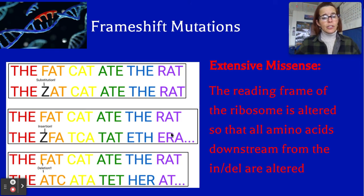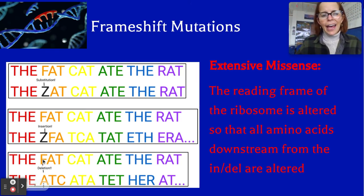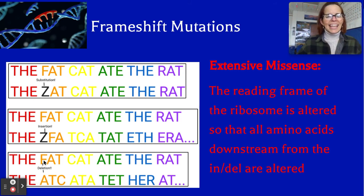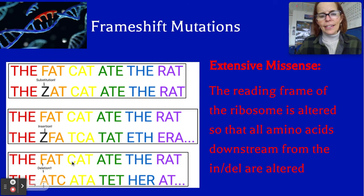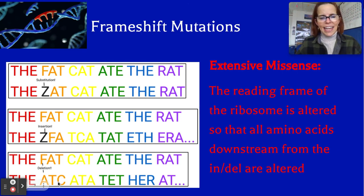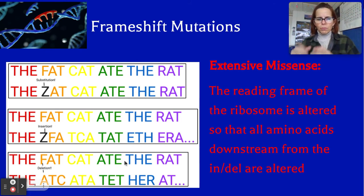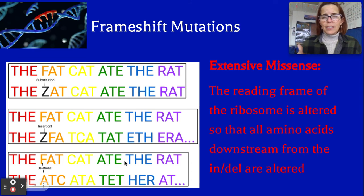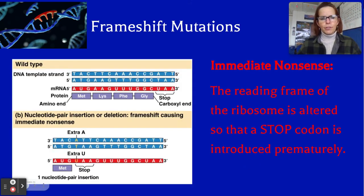Same thing with a deletion. In this example, we deleted the F. So instead of F-A-T being a reading frame, it's now A-T-C, then A-T-A, then A-T-E-T — it screws up the reading frame for everything afterwards, including the stop signals. Everything gets scrambled. That's a frameshift mutation.